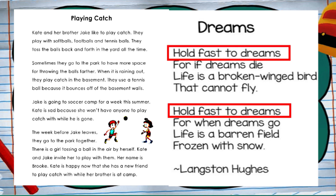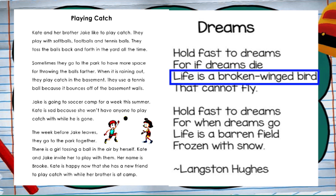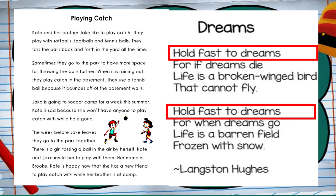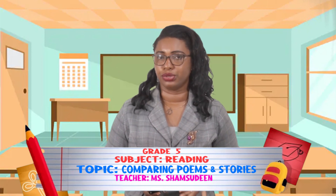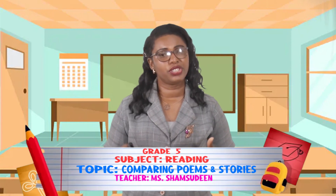You will see the line 'hold fast to dreams' being repeated: 'Hold fast to dreams, for if dreams die, life is a broken-winged bird that cannot fly.' And here we see again, 'hold fast to dreams' — that first line is repeated, which brings out the element of repetition. So there you have it: your story was 'Playing Catch' and your poem was 'Dreams.' Now search your language text and try to figure out which of those are stories and which are poems.